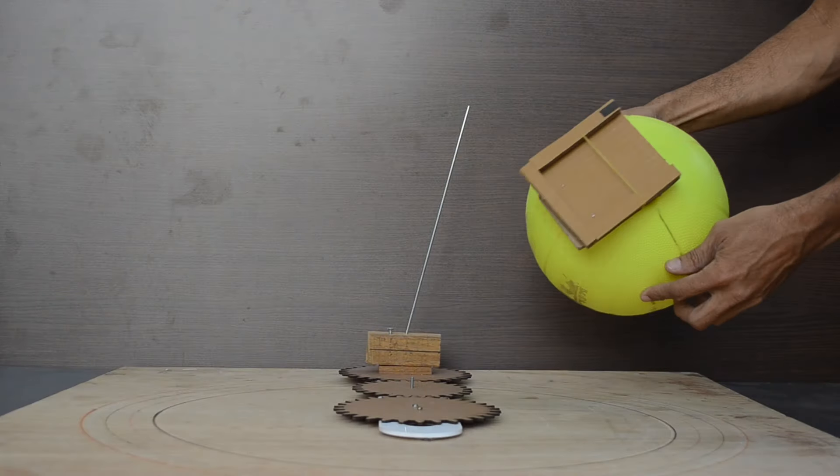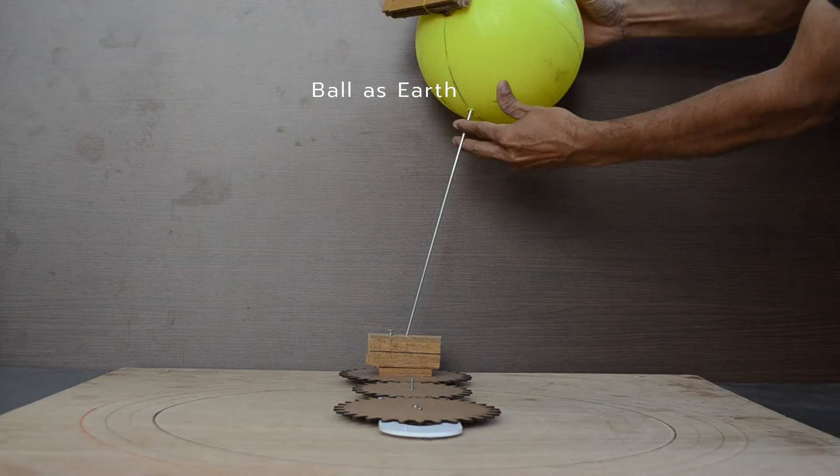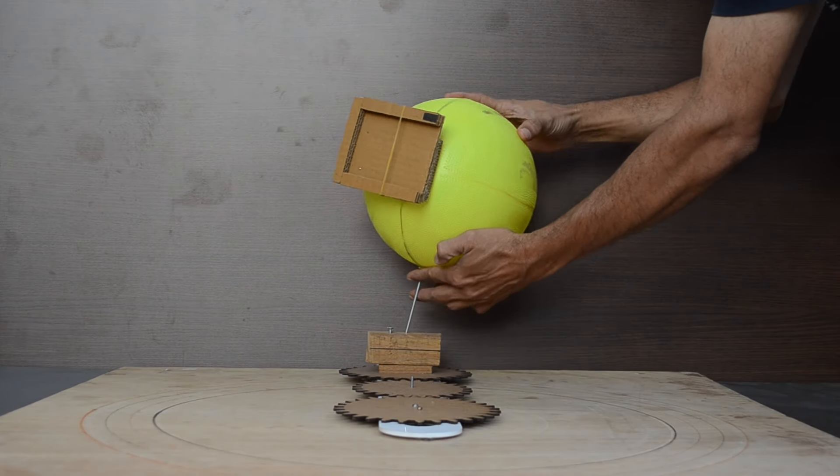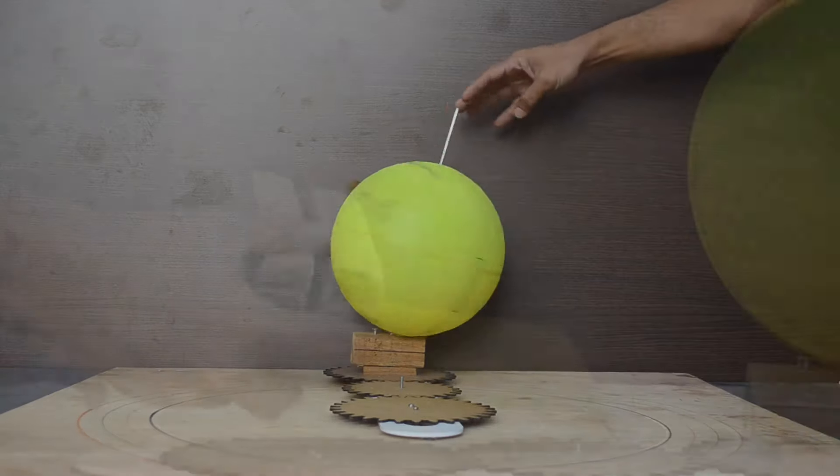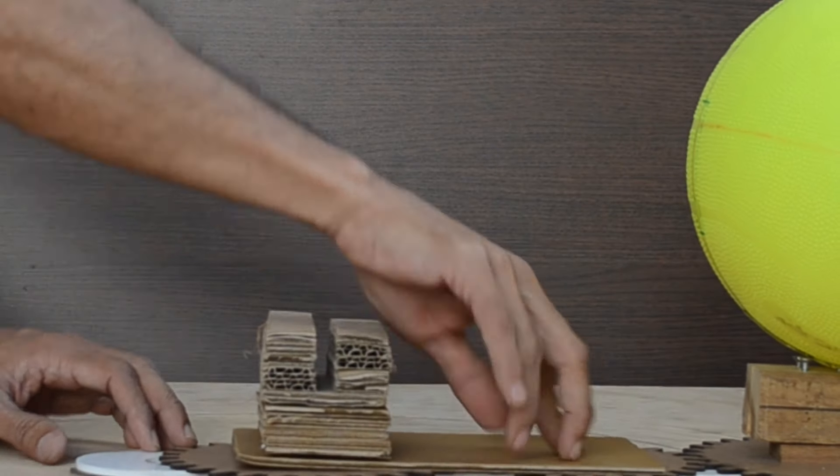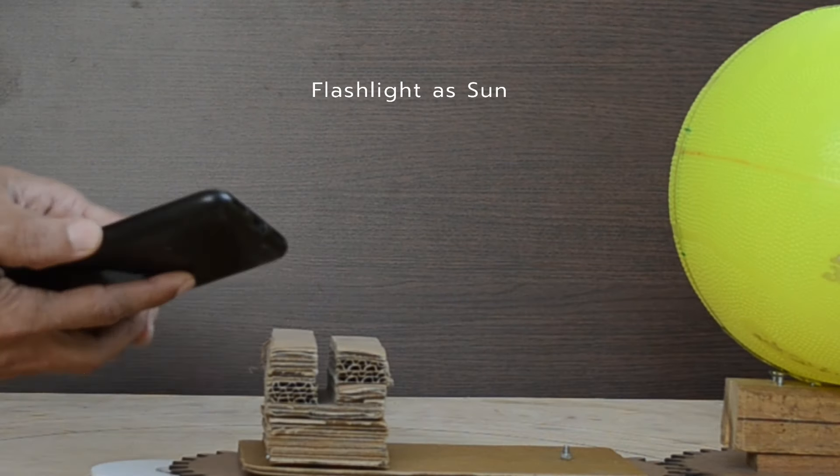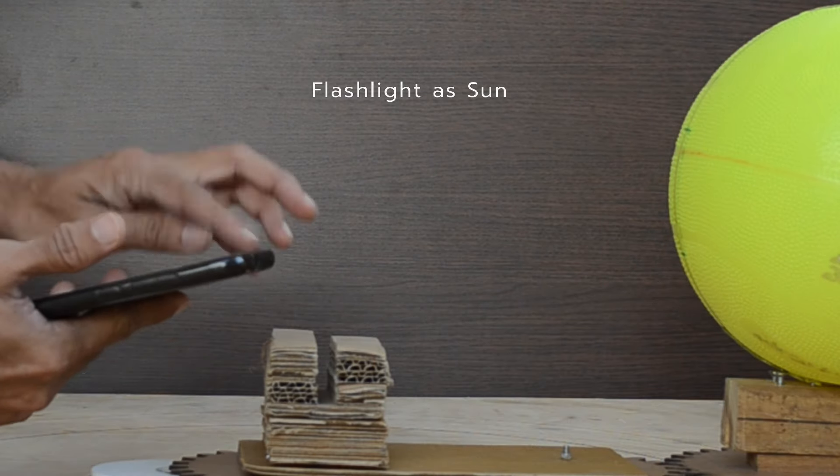This large ball is our Earth. Flashlight of this phone will be our Sun. Let us place it in the center.